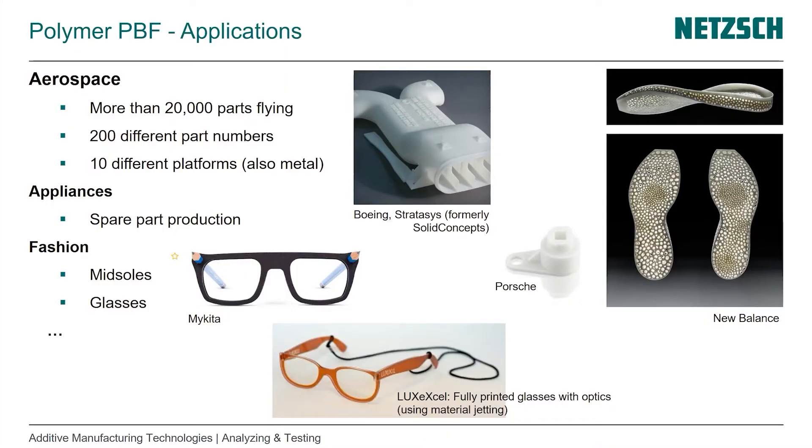Some of the applications: we have seen huge developments in aerospace, in appliances, and in fashion. Aerospace already some years ago had more than 20,000 flying parts, 200 different part numbers, and 10 different platforms. Platforms means different manufacturing technologies from different suppliers, but also different technologies, for example polymer and metal.